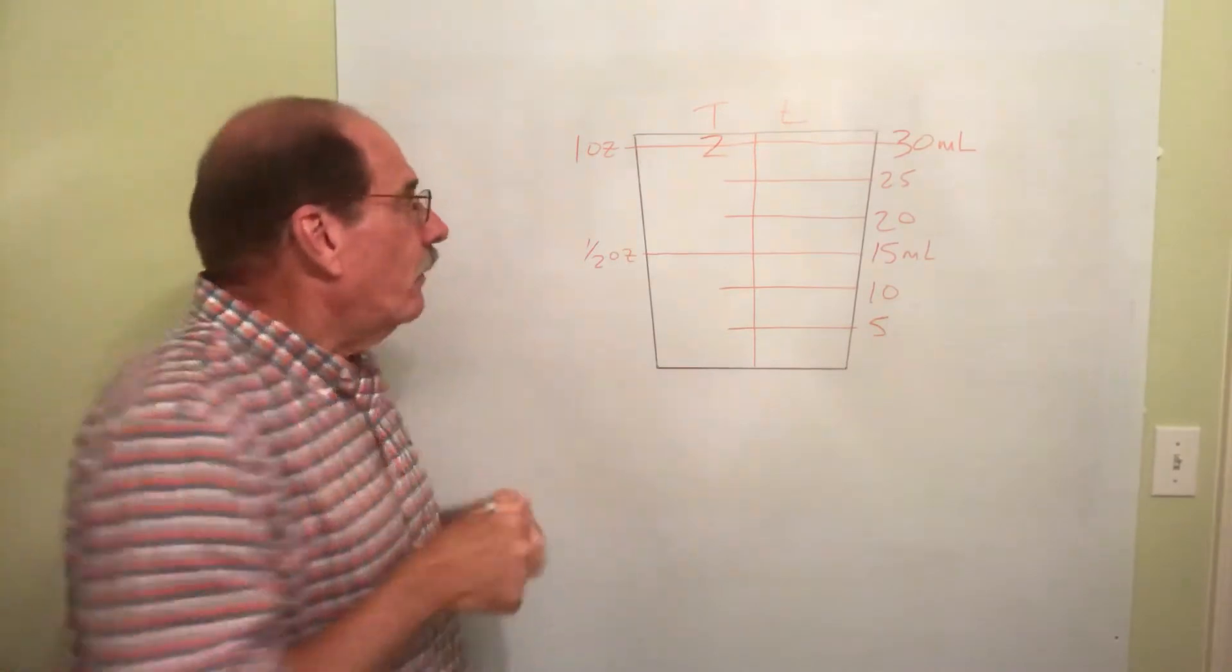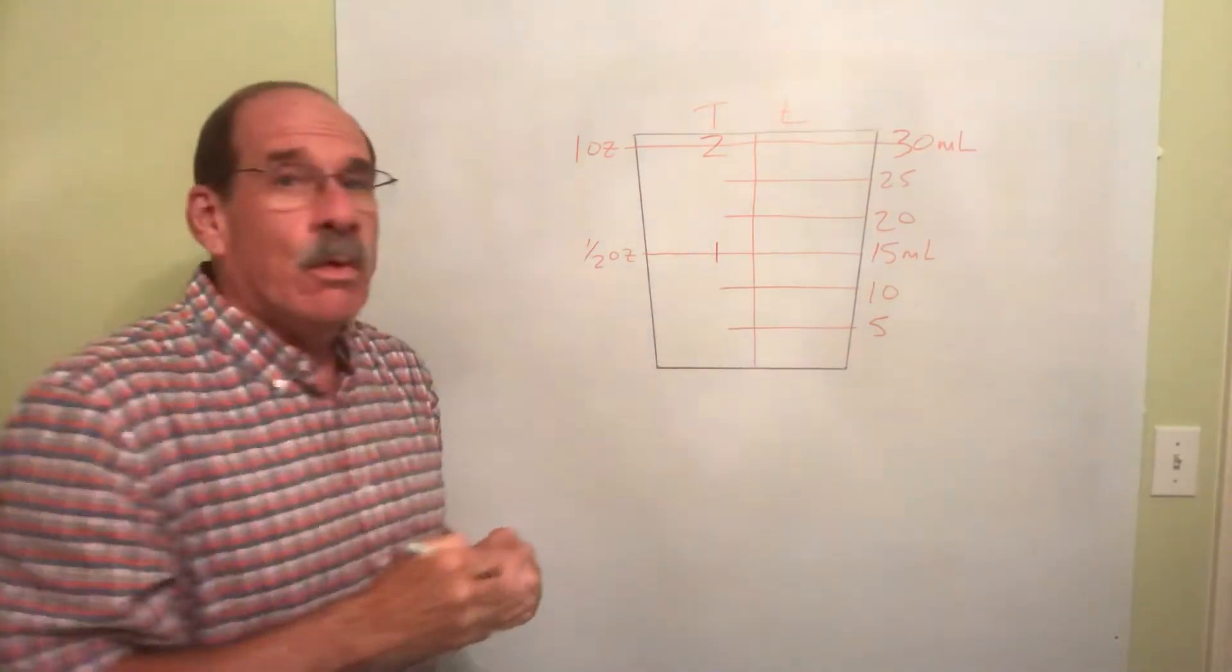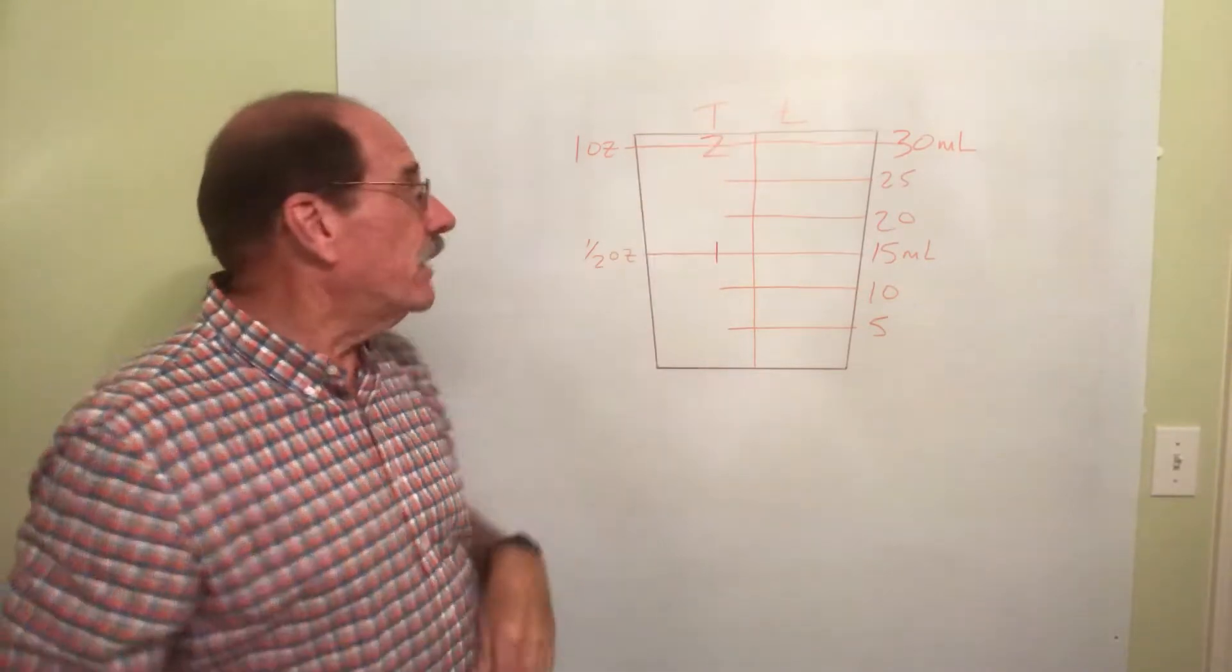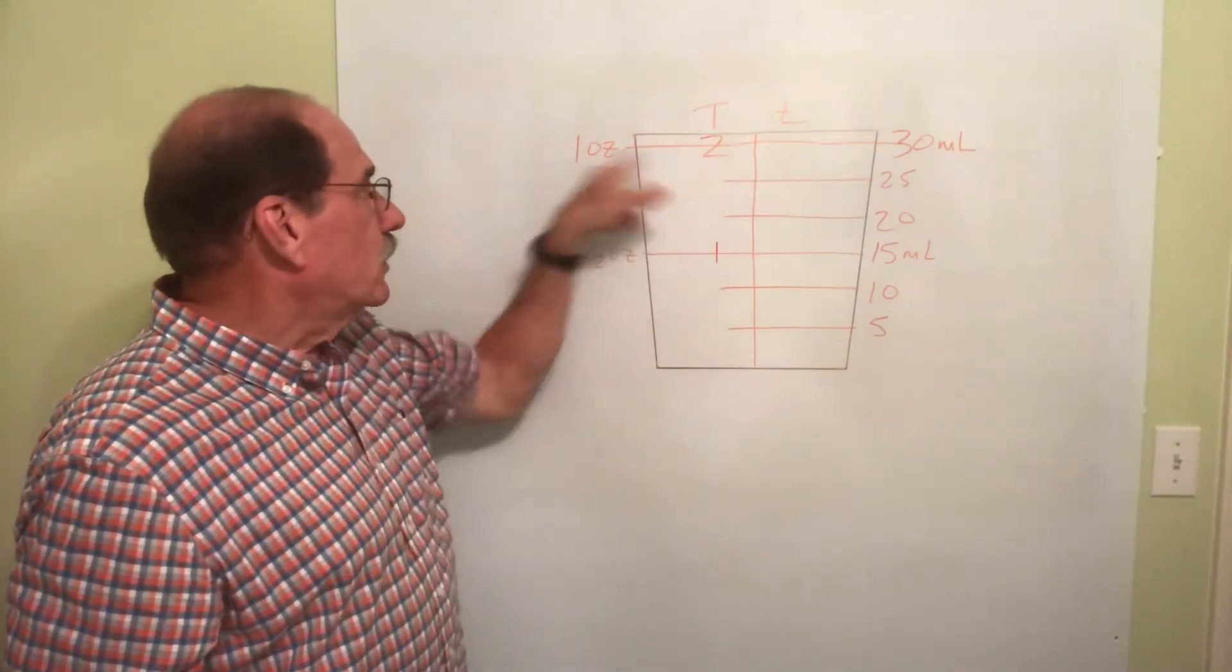Halfway down the cup is going to be, let's see, half of two. Oh, that's one. So, one tablespoon. Again, capital T, tablespoon, the larger measurement. That's a half an ounce. Two of them is one ounce.